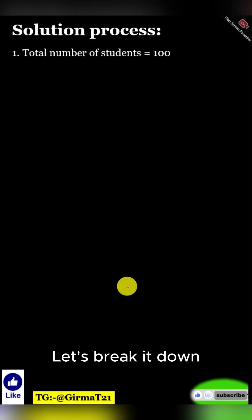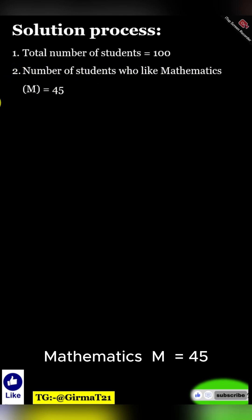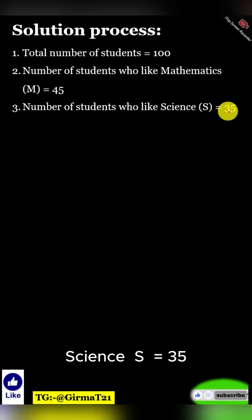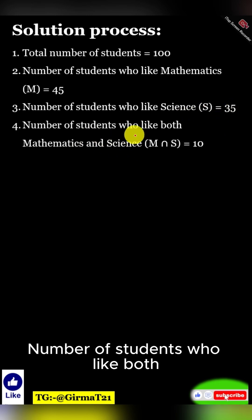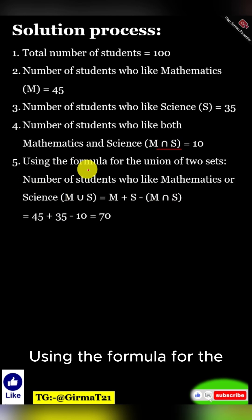Let's break it down. Solution process: Total number of students equals 100. Number of students who like mathematics (M) equals 45. Number of students who like science (S) equals 35. Number of students who like both mathematics and science (M ∩ S) equals 10. Using the formula for the union of two sets,